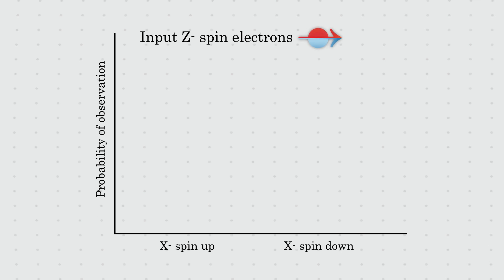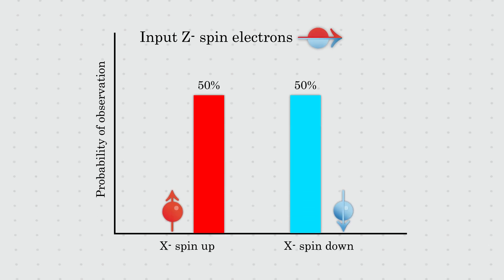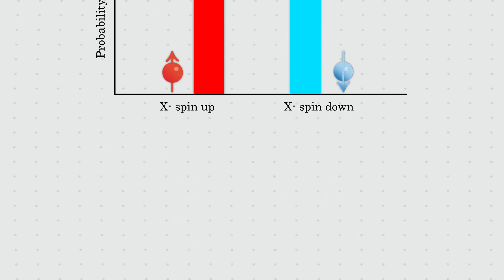Instead, we observe either the measuring device measuring the electron in spin down direction with an approximate frequency of 50%, or the measuring device measuring the electron in the up direction with an approximate frequency of 50%. Here, we have reached a version of the measurement problem.